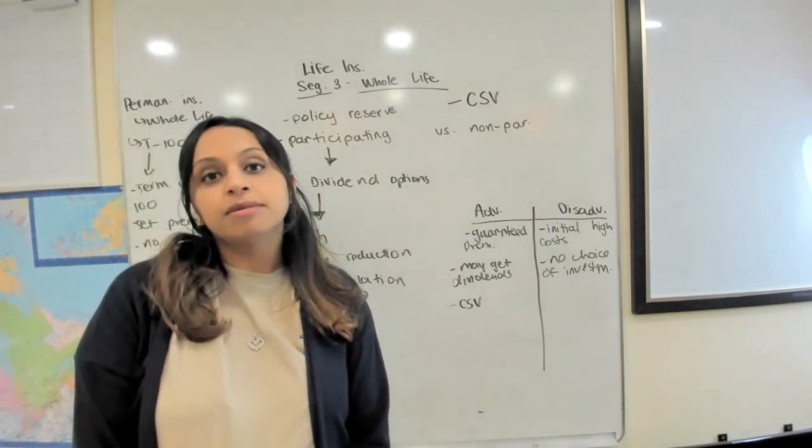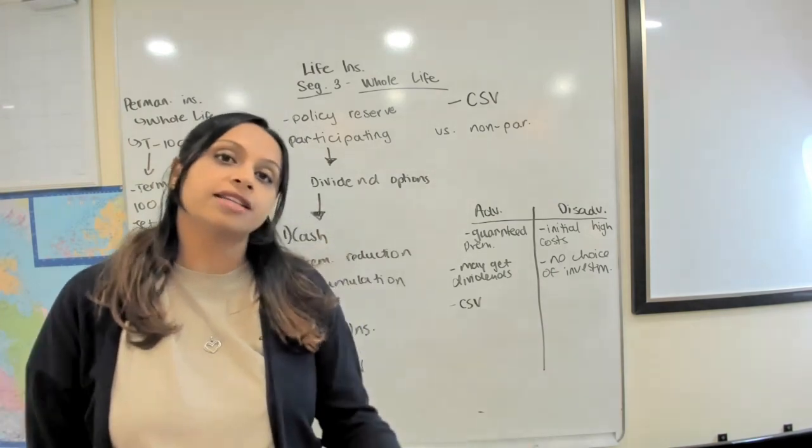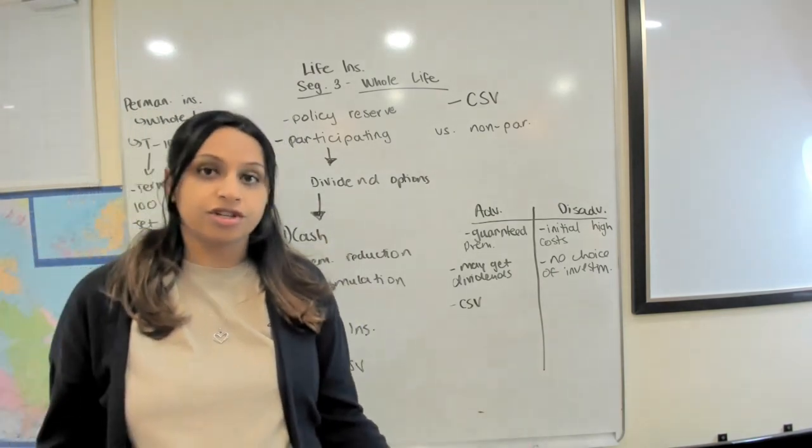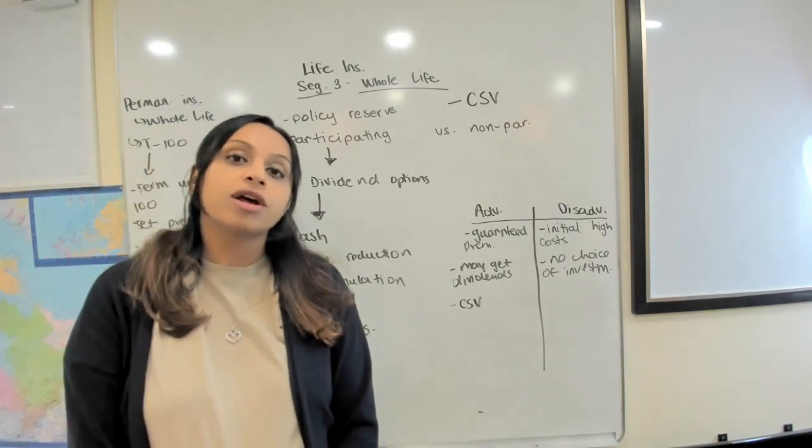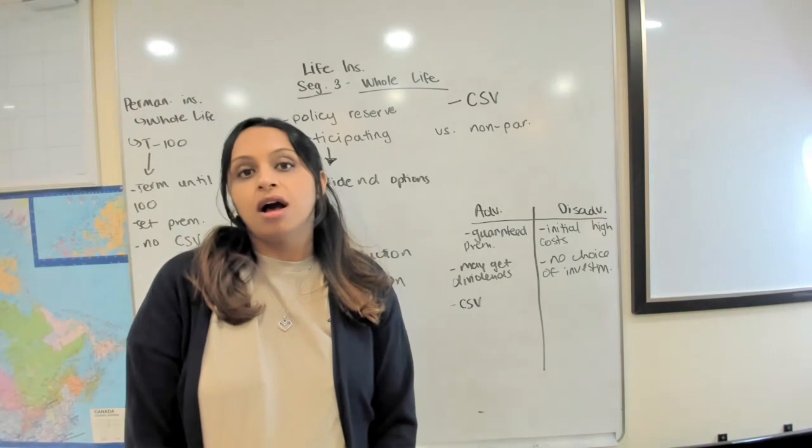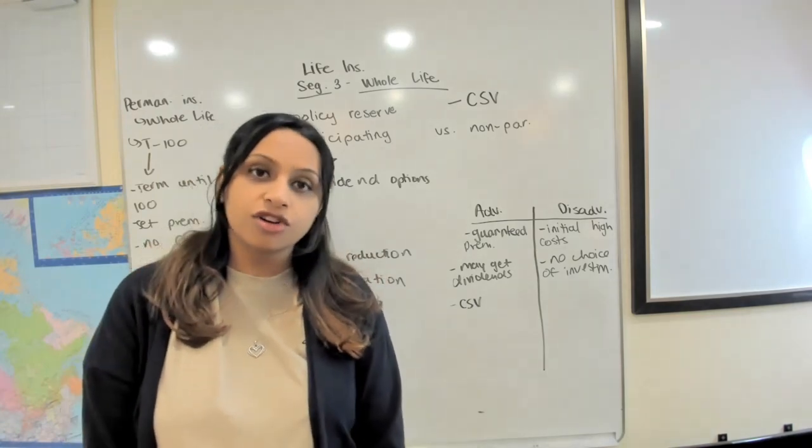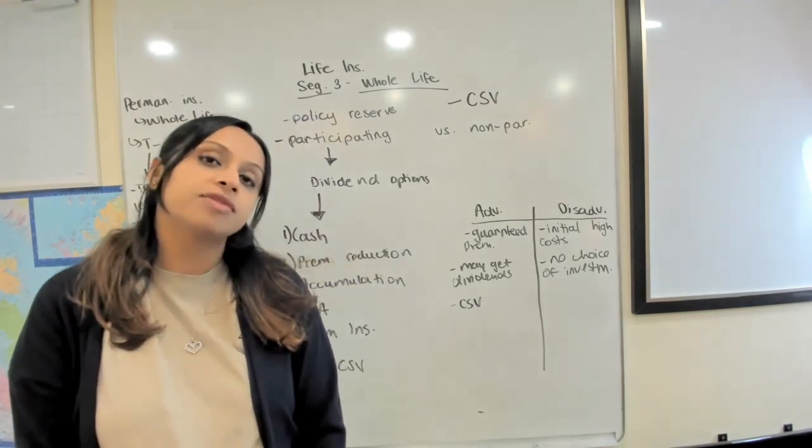But the difference is that earlier on the premium they kind of raise the price to balance out for the later years. So for example, let's say if we have a 30 year old getting term 100 maybe it might be let's say $100, and the same 30 year old getting whole life it might be $150.